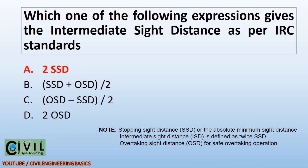Which one of the following expressions gives the intermediate sight distance as per IRC standards? 2 times stopping sight distance. Note: stopping sight distance (SSD) is the absolute minimum sight distance. Intermediate sight distance (ISD) is defined as twice SSD. Overtaking sight distance (OSD) is for safe overtaking operation.